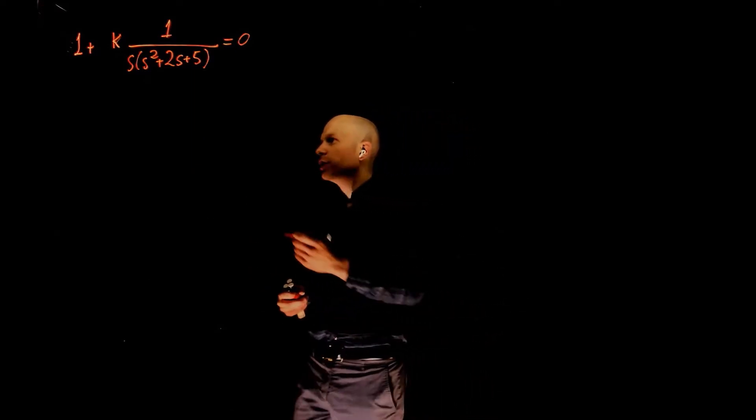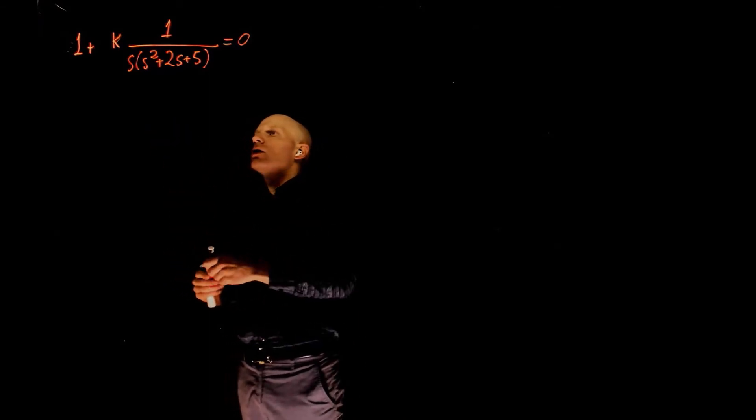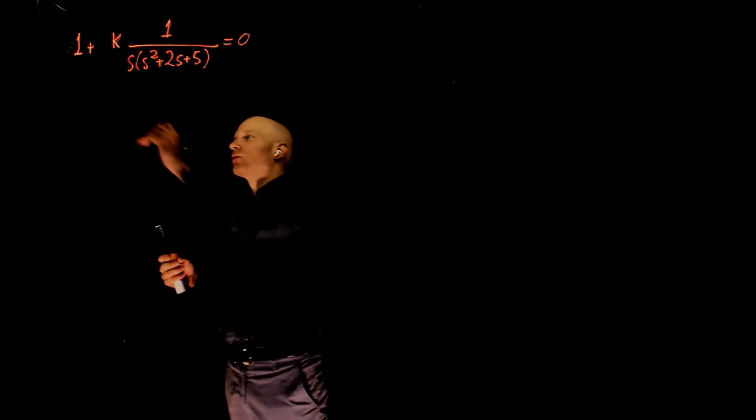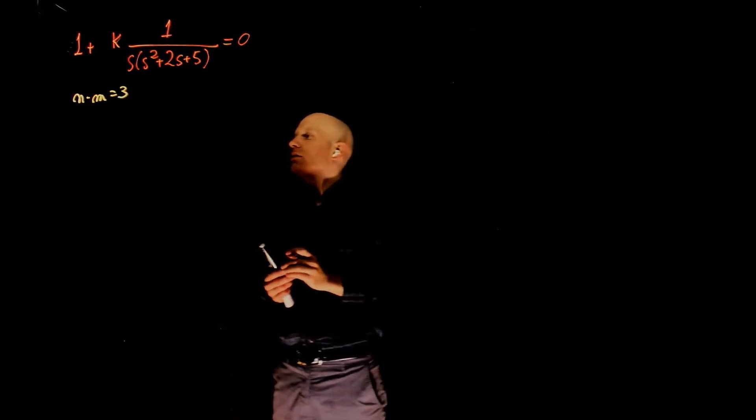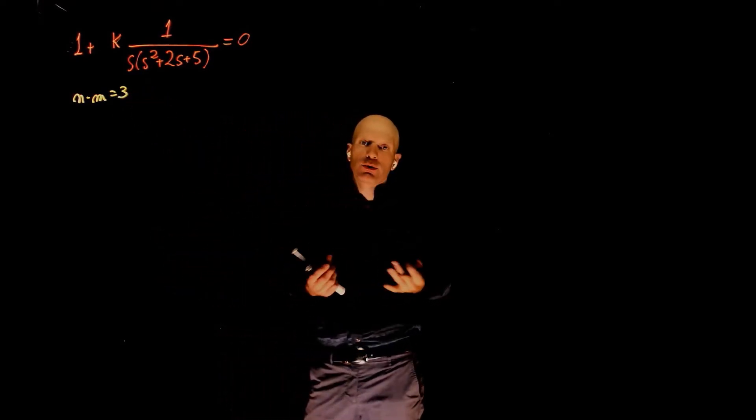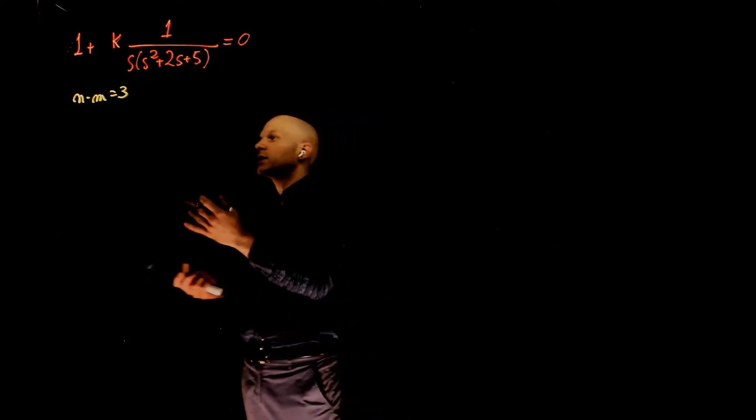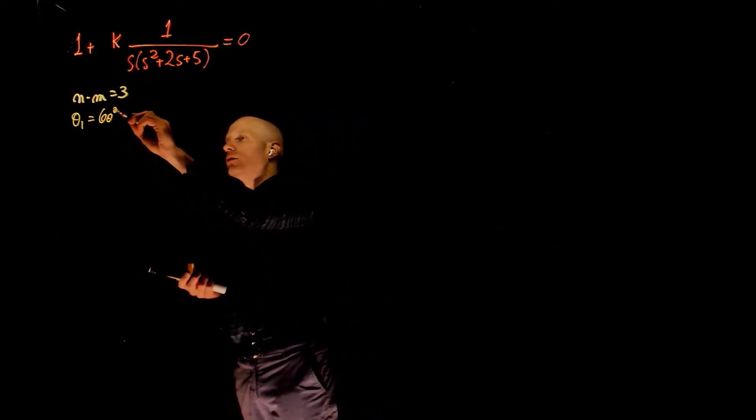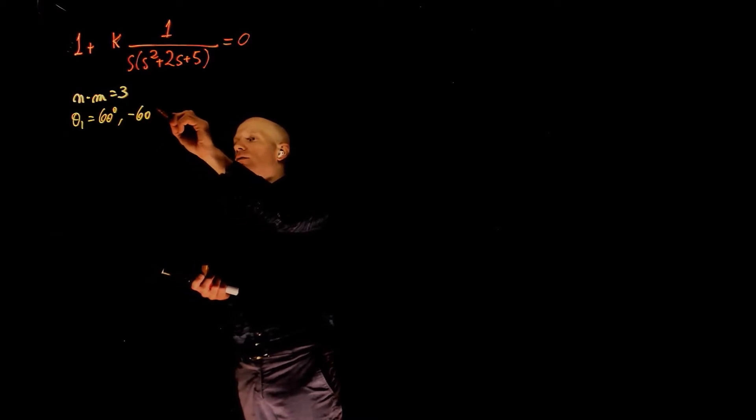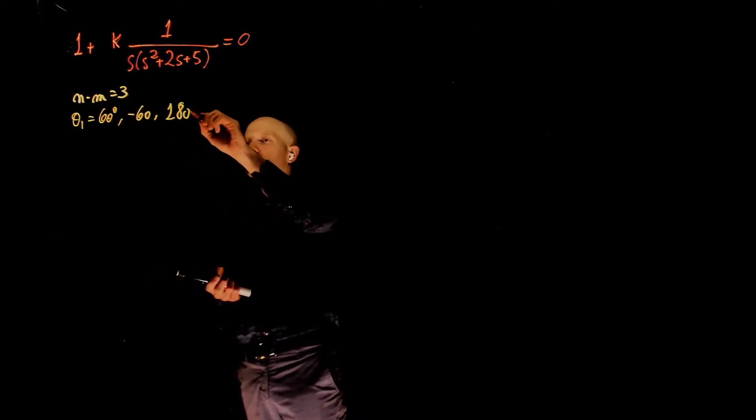This system has three poles and no zeros, so n minus m equals 3. When n minus m equals 3, they have an excess of three poles, they go to infinity following asymptotes, and the angles of those asymptotes are 60, negative 60, and 180 degrees.